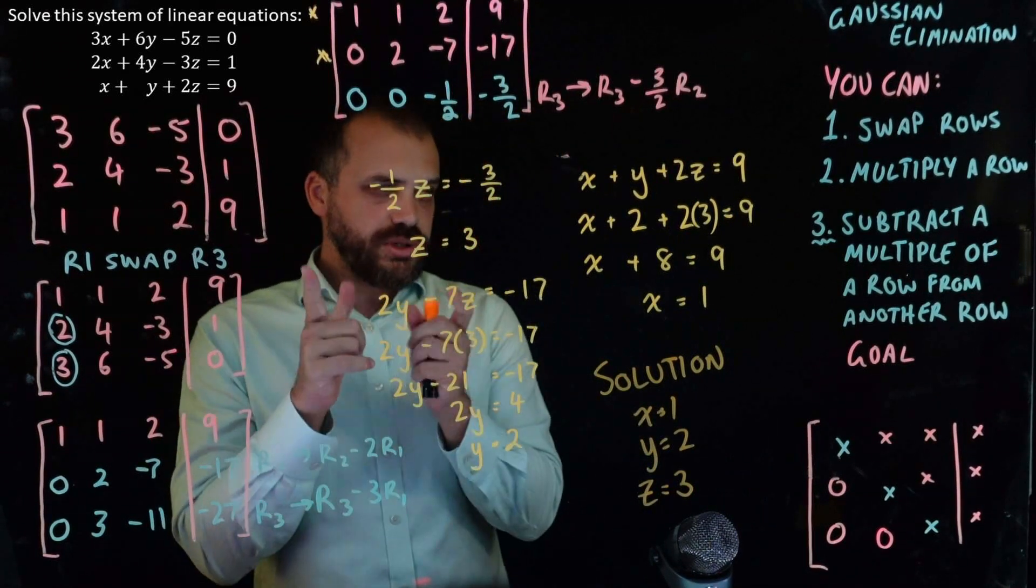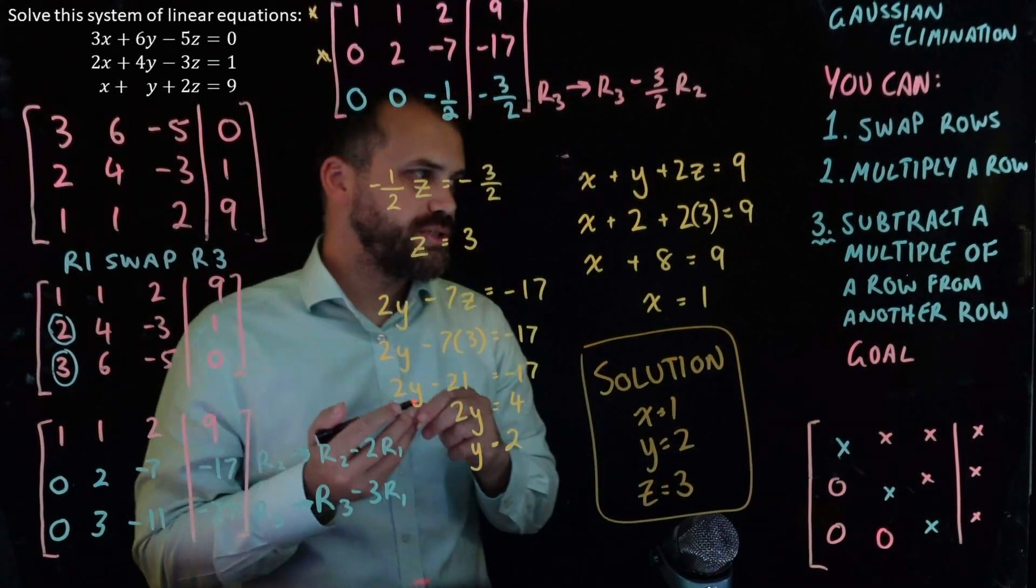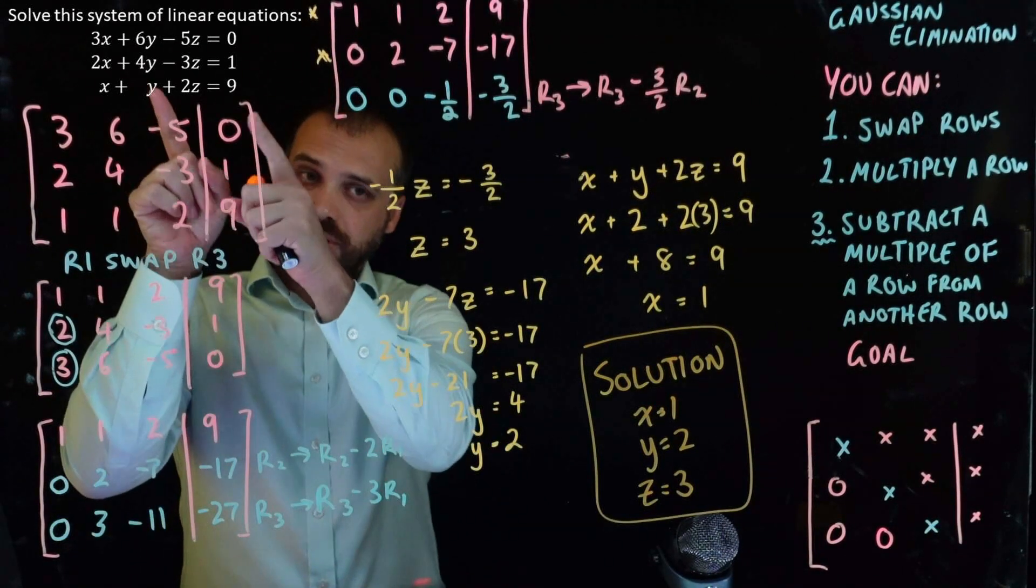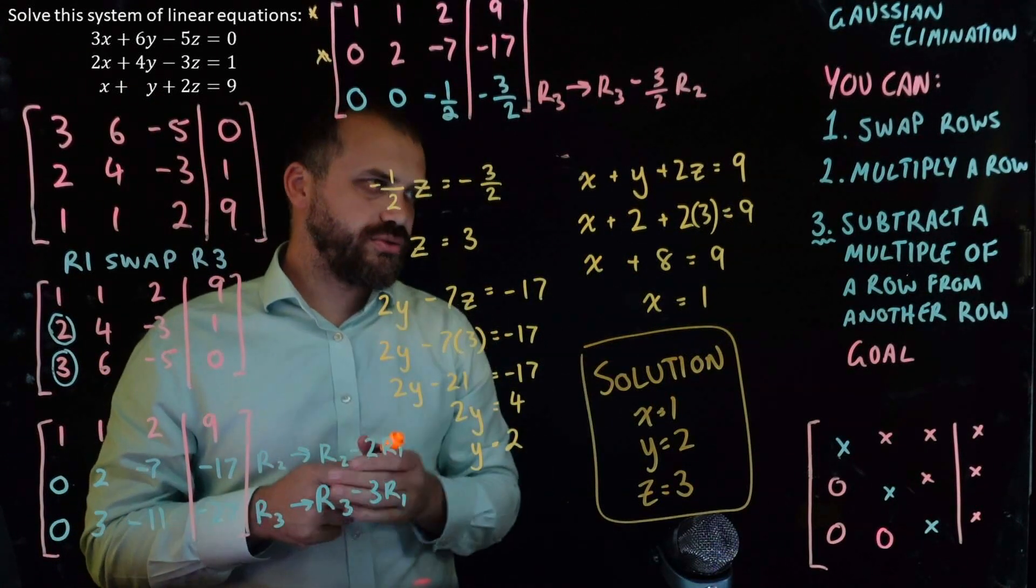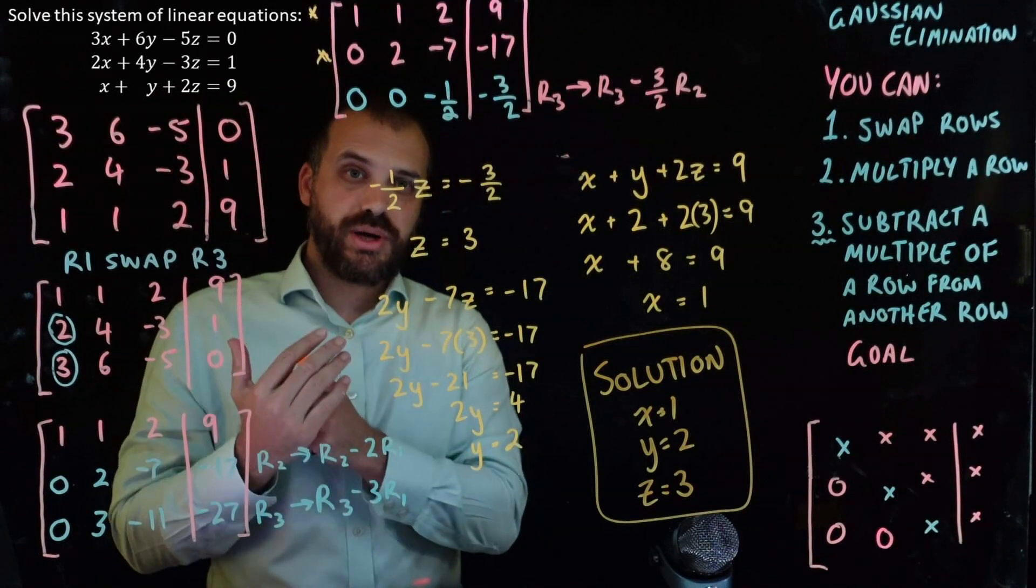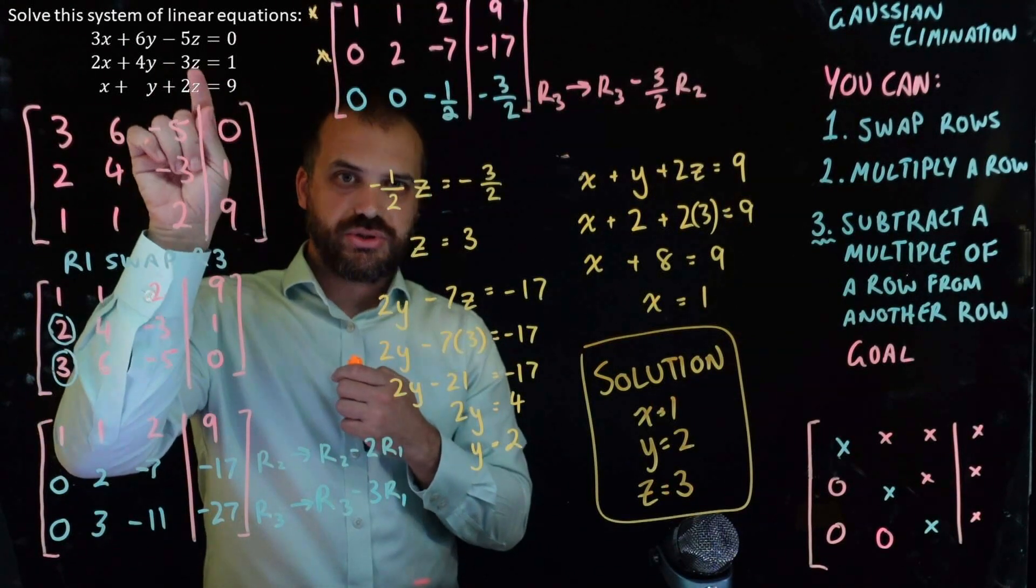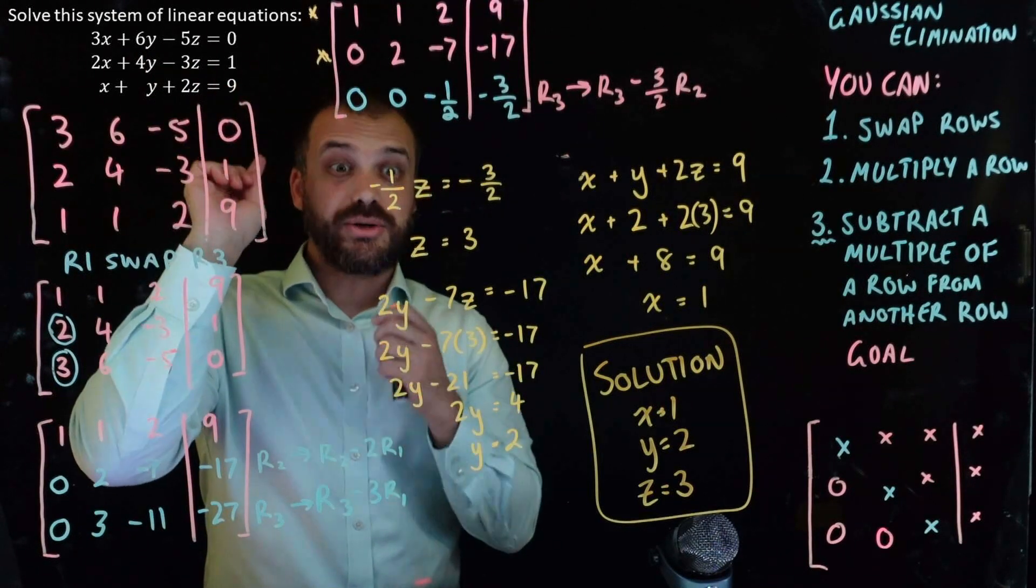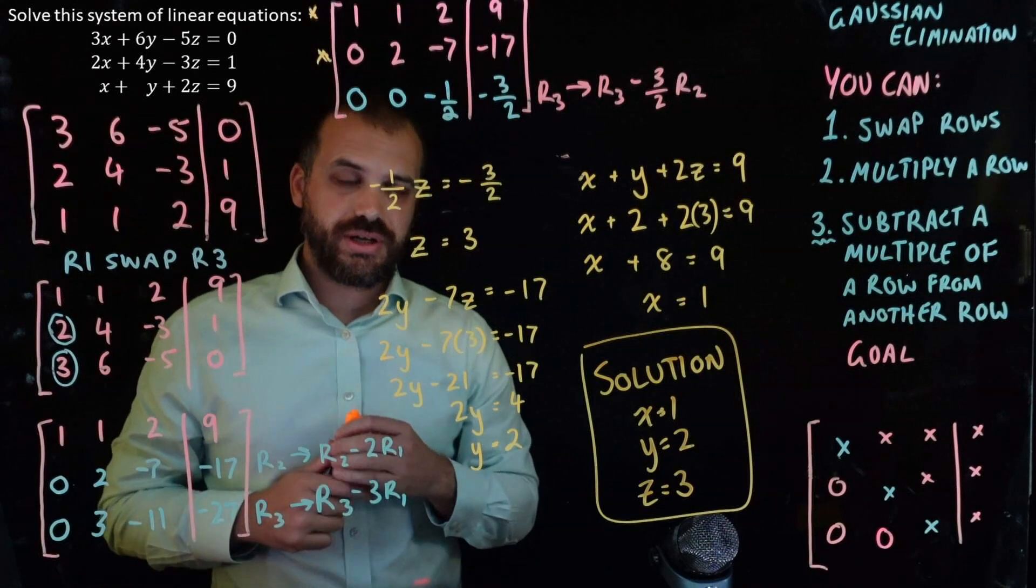Now, what does that solution, this thing, what does it mean? Simultaneous equations. Looking at our simultaneous equations, it means that if we sub 1, 2, and 3 in for x, y, and z into each of those equations, they'll be true. 3 times 1 plus 6 times 2 minus 5 times 3 equals 0. That's true. And it's true for the next one, and it's true for the next one.